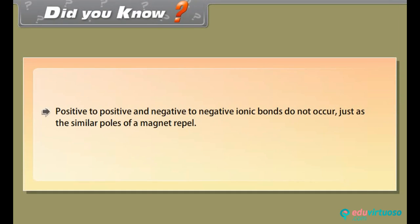Did you know? Positive to positive and negative to negative ionic bonds do not occur, just as the similar poles of a magnet repel.